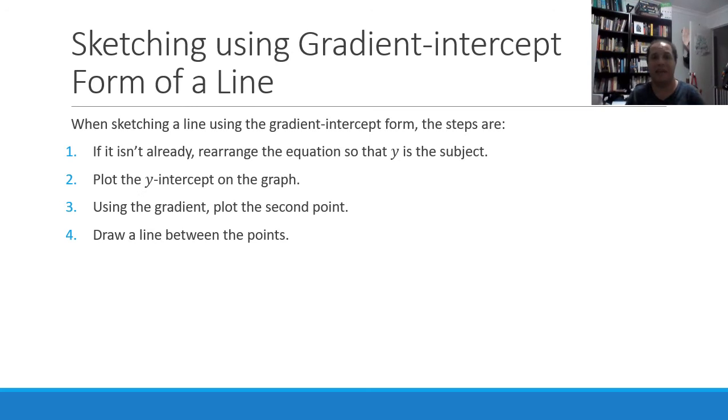All right, so when it comes to sketching using the gradient intercept form of a line, there are four main steps to follow. First of all, if it isn't already, rearrange the equation so that y is the subject. Plot the y-intercept of the graph. Remember, this c value is our y-intercept, so we can plot that on our graph straight away. Using the gradient, plot the second point. And then after that, draw a line between those two points.